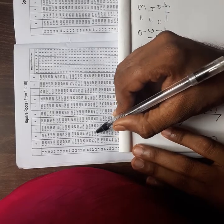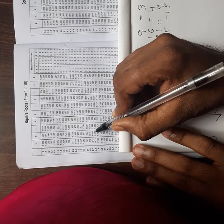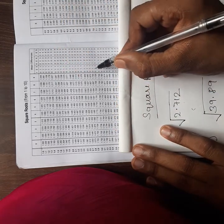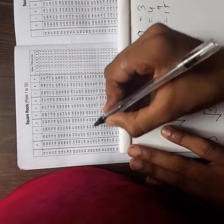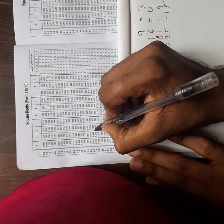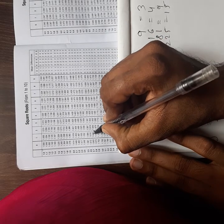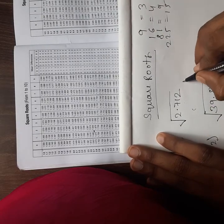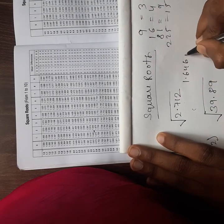For 2.7, I will go for row 27. This is 1.646. And in mean difference, I have to go for column 1, so that's 1 only. So 2.71 is 1.646 plus 1, which is 1.647.